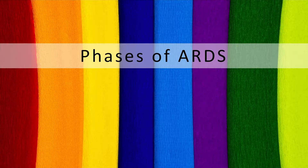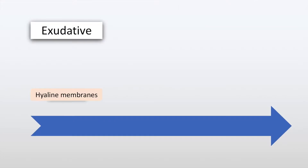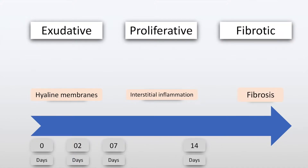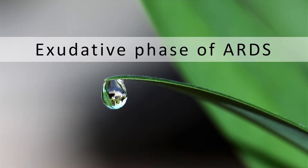Acute Respiratory Distress Syndrome has three phases. The exudative phase, in which hyaline membranes are formed, occurs between 0 to 7 days. The proliferative phase, in which there is interstitial inflammation, may occur up to 14 days. Finally, the fibrotic phase, in which there is fibrosis, occurs up to 21 days or more.